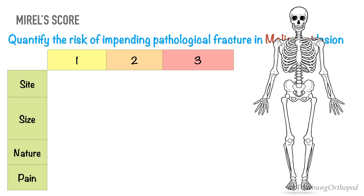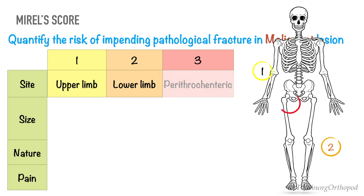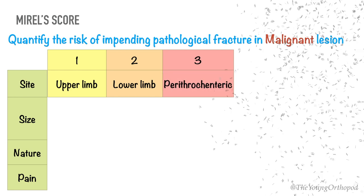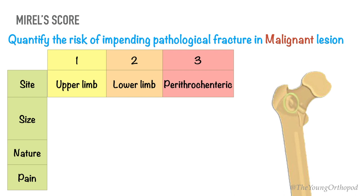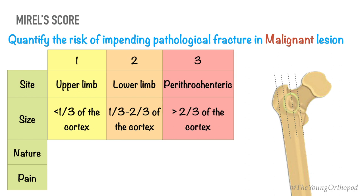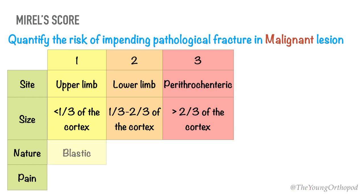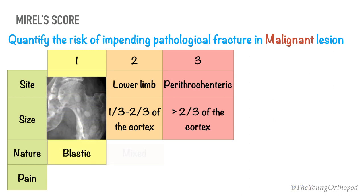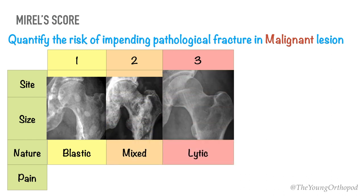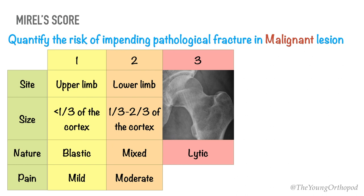The site of the lesion can be in the upper extremity, lower extremity, or the peritrochanteric area of the femur. The size of the lesion is expressed as a fraction of the bone diameter. The radiographic nature of the lesion is subdivided into three categories with progressively increasing scores assigned to blastic, mixed, and lytic lesions. Pain is the only subjective variable, categorized as mild, moderate, or functional pain.